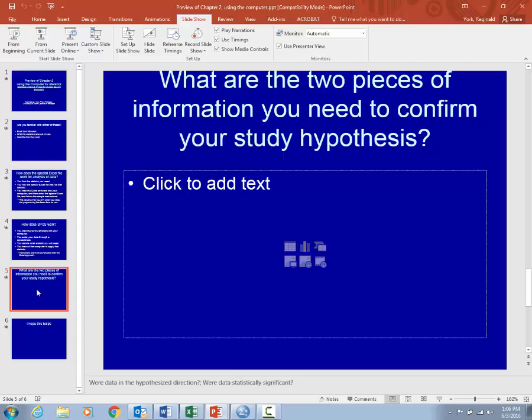One of those things is you must find that the data went in the hypothesized direction. If your hypothesis was that post-test scores will be higher than pre-test scores, you will first of all look to see if that is true. Were the post-test scores actually higher? If not, the data does not support the hypothesis.